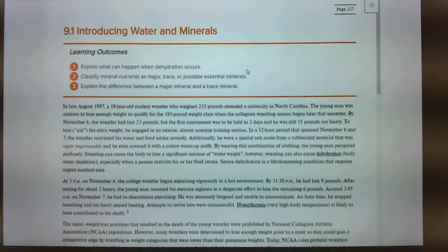When the collegiate wrestler's season began later that semester, by November 6th, the wrestler lost 23 pounds, but the first time meet was to be held in two days. And he was still 15 pounds too heavy. To lose extra weight, he engaged in an intense, almost non-stop training session. Basically, he ended up dehydrating himself. Okay. By wearing this combination of clothing, because he had the warm-ups. You see people, Rocky. I remember Rocky wearing the hoodies. Or you look at UFC fighters, and people training for these kinds of things.